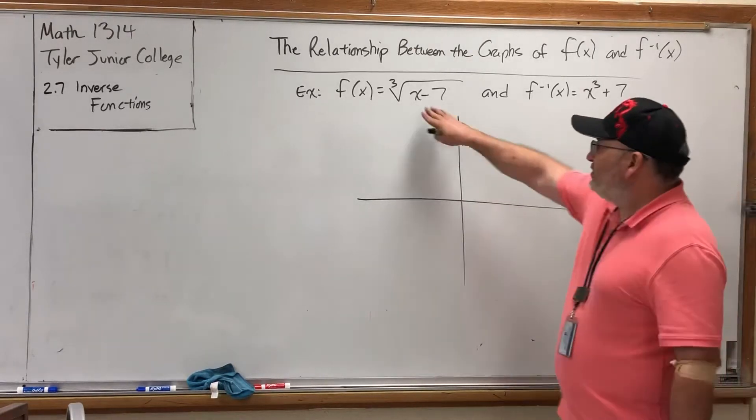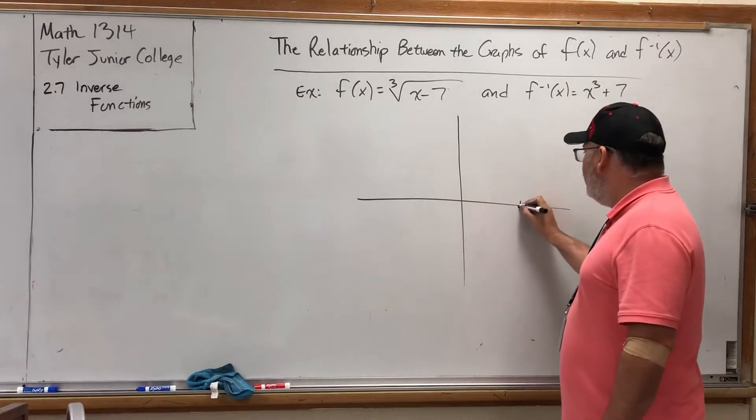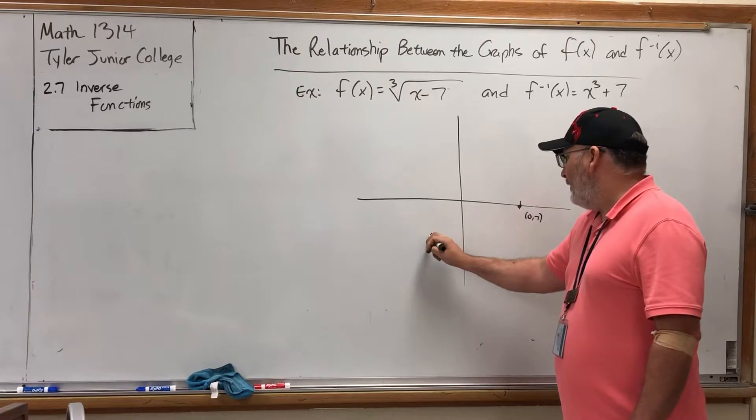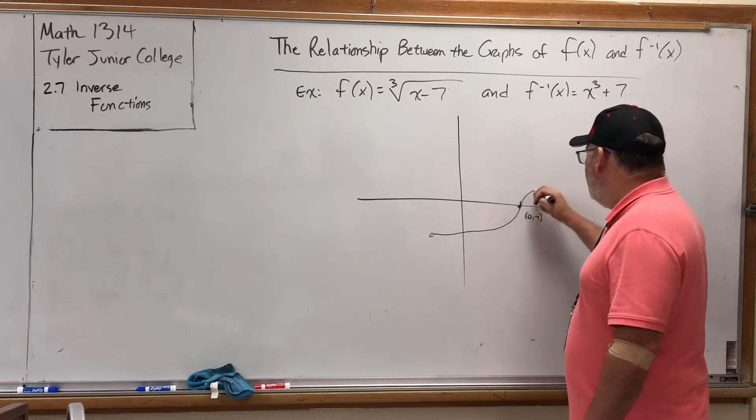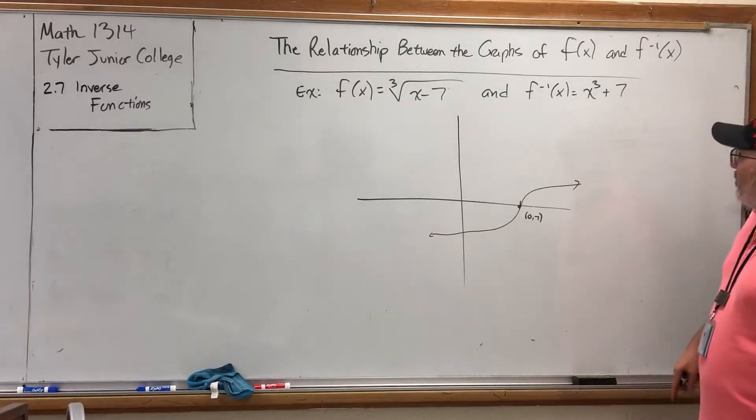The graph of f(x) is the cube root graph moved to the right 7. So if we move to the right 7, over here at (0,7), we have the cube root graph that looks something like this. Not perfectly drawn to scale.